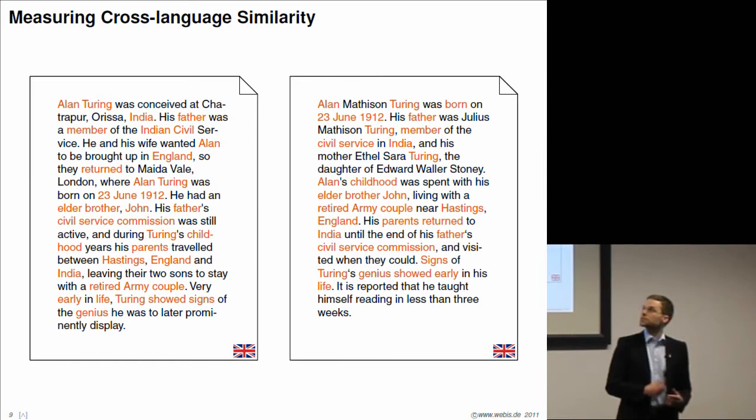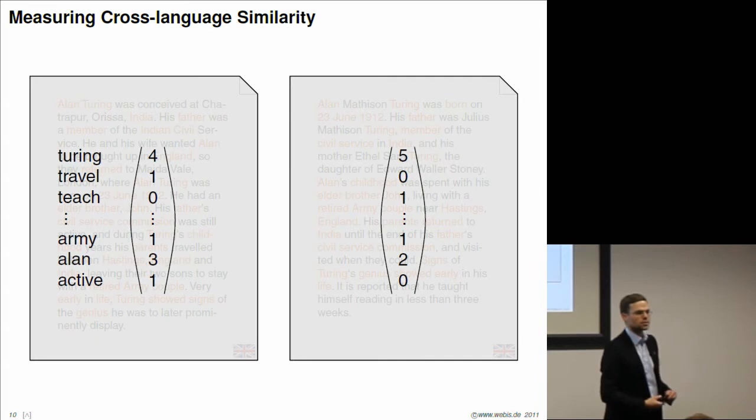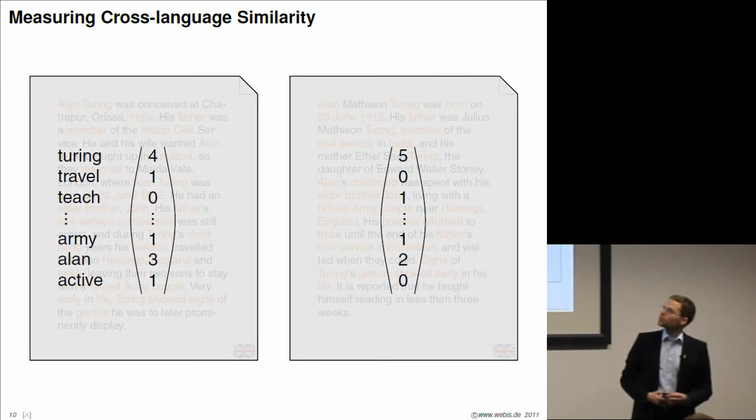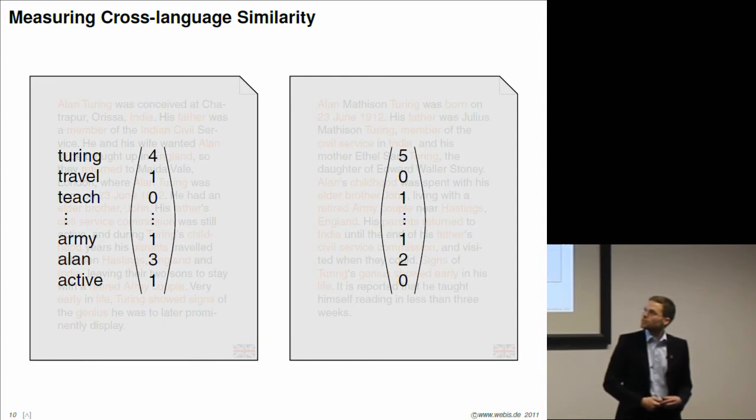The first idea, and this is usually what is done in research, is to look at overlapping words. I've highlighted them here for you. There are many overlapping words between these two texts. These overlaps are computed and compiled into these structures. We simply count all the words appearing in the two documents and represent them as vectors. The word Turing appears four times in this document, five times in this document. The word Army once here and once here.